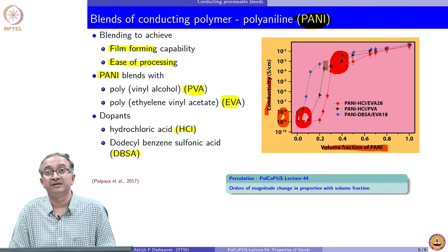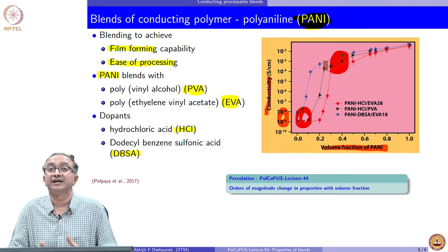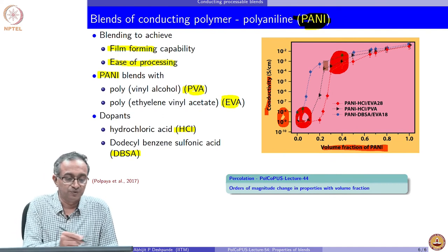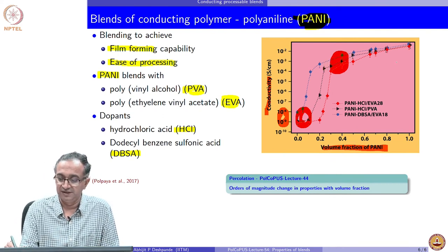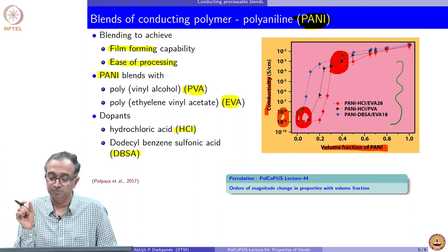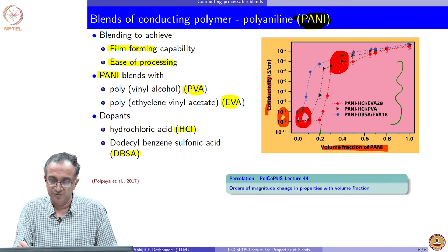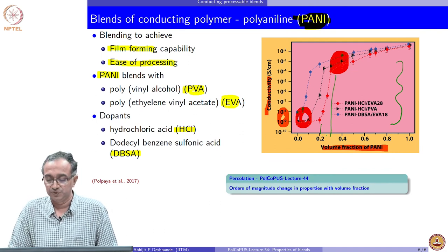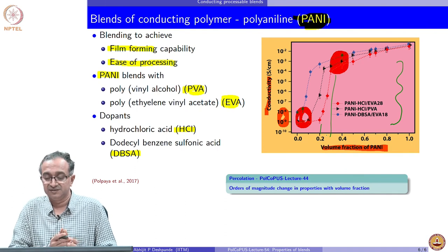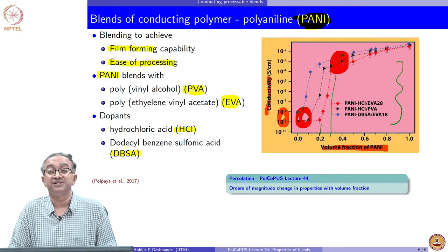We do not need to use 100 percent polyaniline because in that case, it is difficult to process it. But we can use 20-30 percent conducting polymer in this case and still get conductivity which is acceptable for a given application. What you notice in this case is the orders of magnitude change in conductivity with small amount of volume fraction. You can go from 0.2 to 0.25 or 0.3 and there is 1, 2, 3, 4, 5, 6 orders of magnitude increase in conductivity.